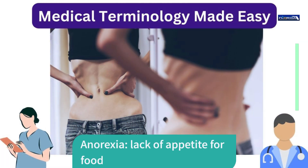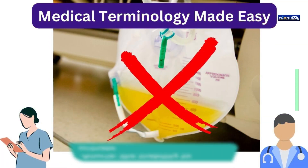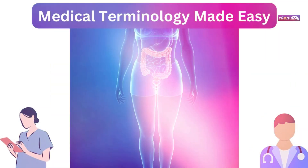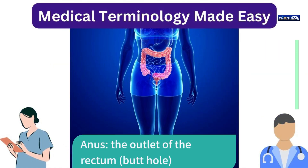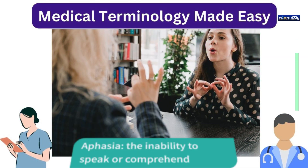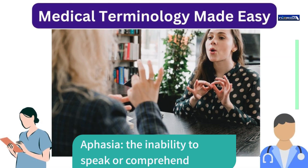Anorexia: lack of appetite for food. Anuria: the inability to urinate. Anus: the outlet of the rectum, also called the butthole. Aphasia: the inability to speak or comprehend.